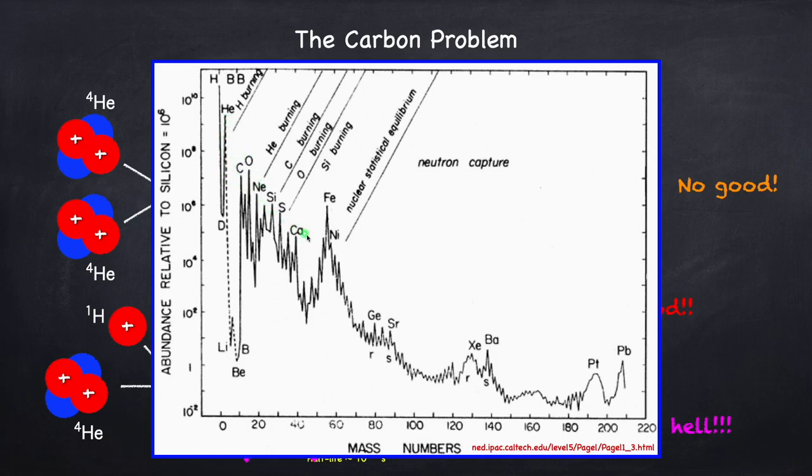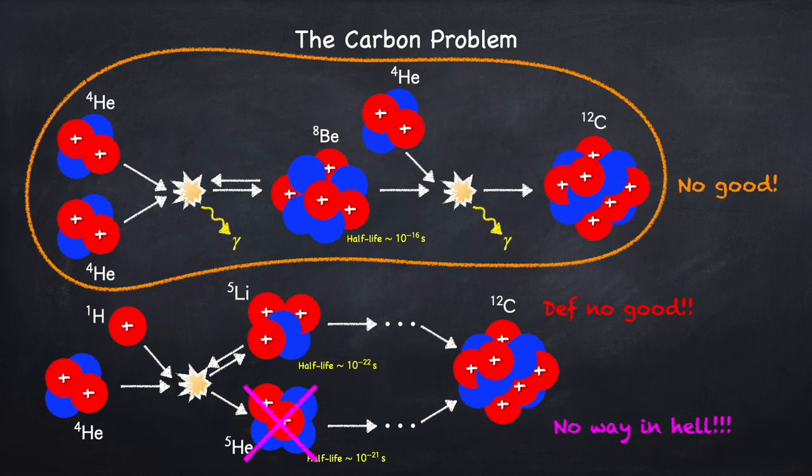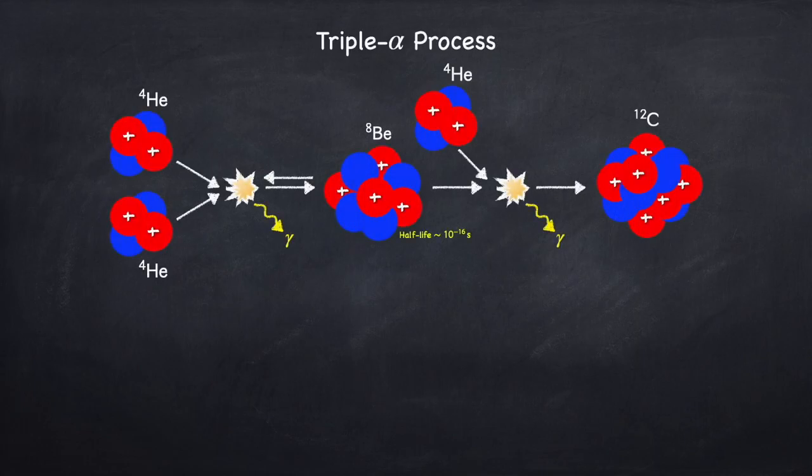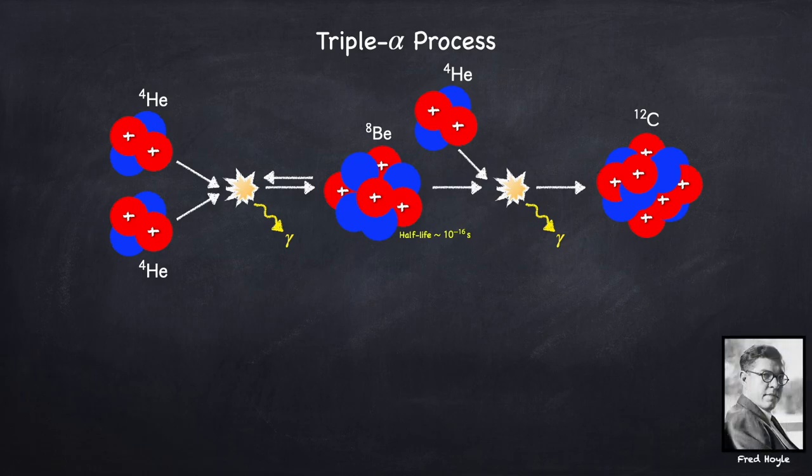So somehow we have to figure out how to jump this gap from helium to carbon. Once you have carbon, then you're off to the races. There's no problem. You can make everything else. Well, let's just say you can make everything up to iron with no problem. There are some other problems with the stuff after iron, but that's a whole separate issue. Now we have to jump this gap somehow. And it would seem that this first option, which is no good, is actually our best option. Somehow this has to work. And as you can see, in this process we're taking three alpha particles and making one carbon. So this is called the triple alpha process. If you're finding this video interesting so far, please like and subscribe and maybe share it with a few friends.